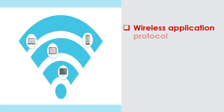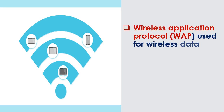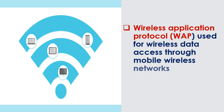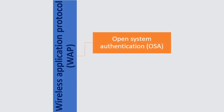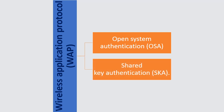Wireless Application Protocol, WAP, is used for wireless data access through mobile wireless networks. WAP defines two authentication methods: Open System Authentication, OSA, and Shared Key Authentication, SKA.